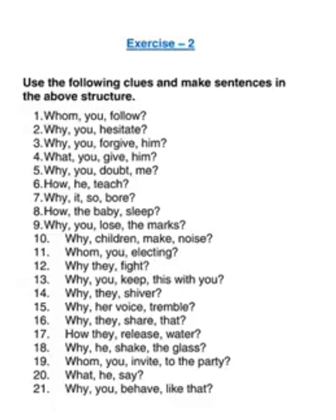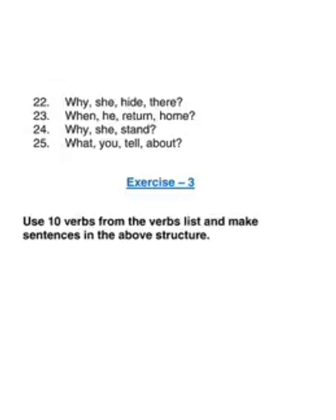Twentieth — 'what he say?' With he you should get is: What is he saying? Twenty-first: 'Why you behave like that?' With you, you get are: Why are you behaving like that? Twenty-second: 'Why she hide there?' Why is she hiding there? Many people make mistakes like this — they say 'why she is hiding there,' which is a very common mistake. If you can correct that, you are on the road to very good English.